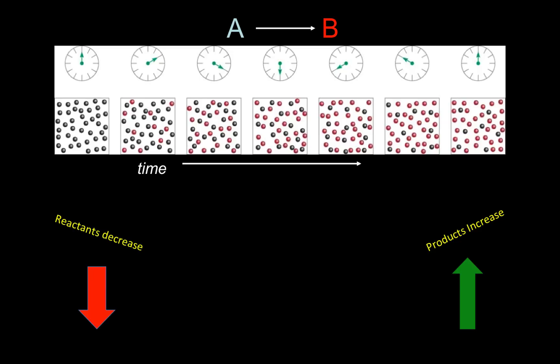This diagram shows the reaction of A changing into B over time. Notice that in the very left square, at the very beginning, all you have is A — all you have are reactants in the vessel. Over time, A changes into B, meaning the concentration of A is decreasing while the concentration of B is increasing. Reactants decrease while products increase.